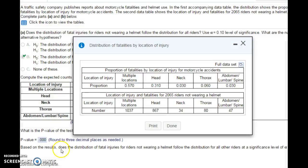Jumping back into our example about motorcycle accidents, we had our predefined distribution, our null hypothesis, and we took our sample here of 2,065 riders who were not wearing a helmet. We're going to see if our sample follows this same distribution, or if there's reason to reject that and accept the alternative hypothesis that riders not wearing a helmet follows a different distribution.